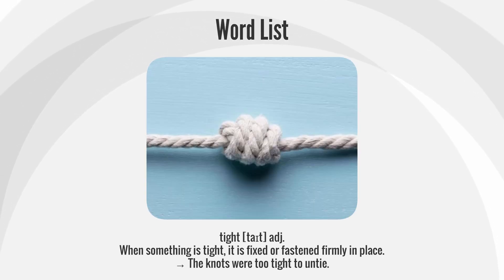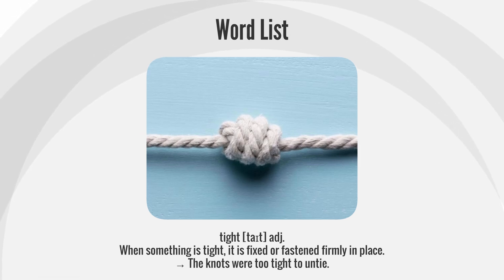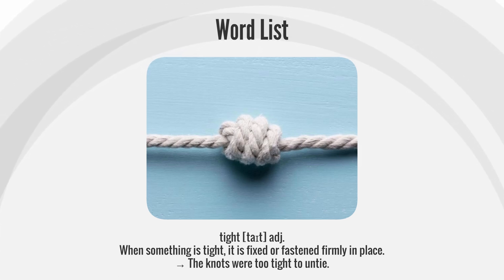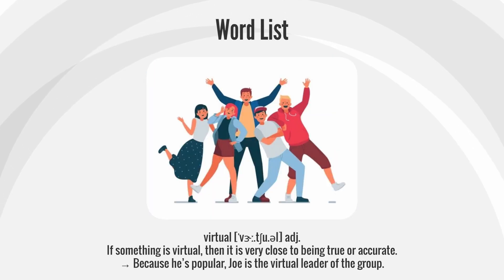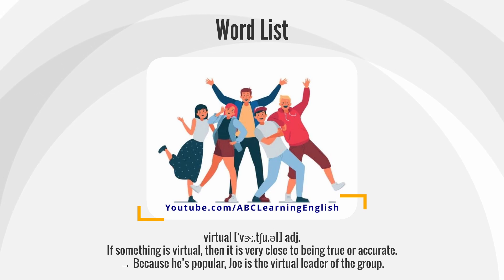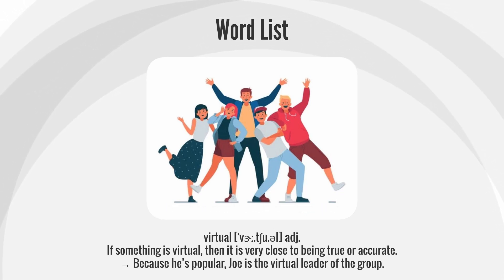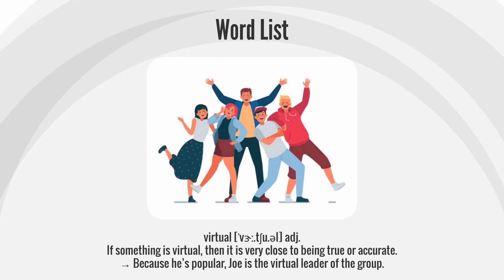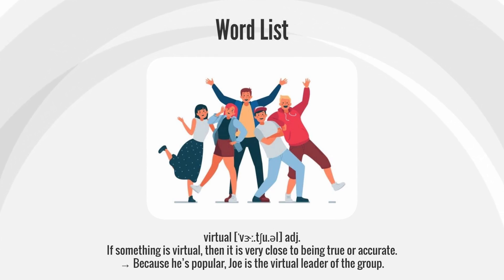Tight — when something is tight, it is fixed or fastened firmly in place. Example: The knots were too tight to untie. Virtual — if something is virtual, then it is very close to being true or accurate. Example: Because he's popular, Joe is the virtual leader of the group.